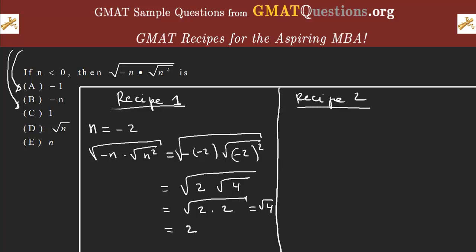Look at the answer choices and plug n equal to negative two into each one to see which gives a value of two. Negative of negative two gives us two — so that looks good. Another choice, root of negative two, doesn't even exist. And n itself gives us negative two, but we want two, not negative two. So that choice is out. The answer to the question is B.